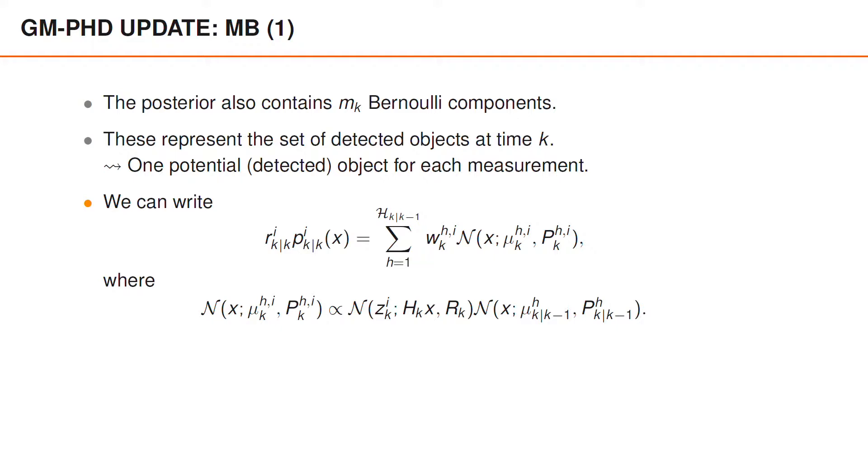Though I am not going to cover all the details here, the Gaussian density is proportional to the measurement likelihood for measurement i times the Gaussian density for component h in the predicted PHD. A consequence of this is that we can obtain the moments of the Gaussian density with index i and h by performing a Kalman filter update of the predicted density number h using measurement number i.